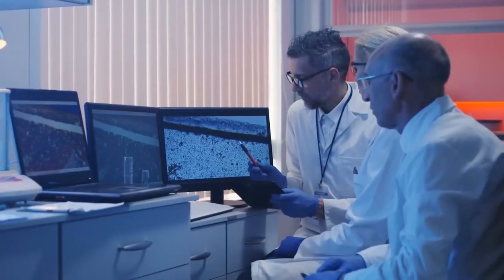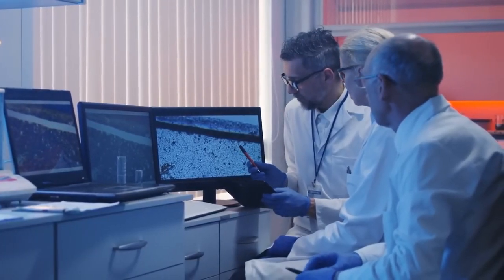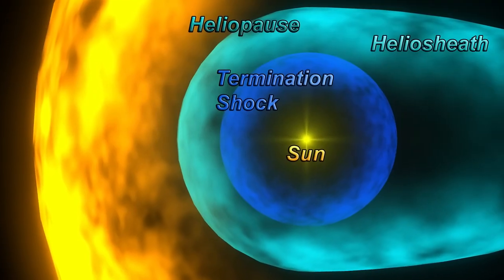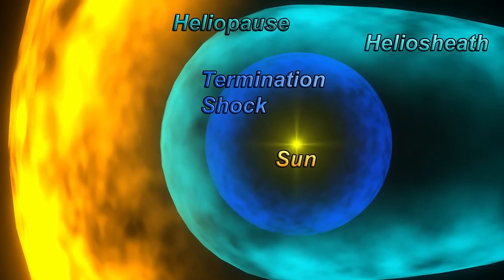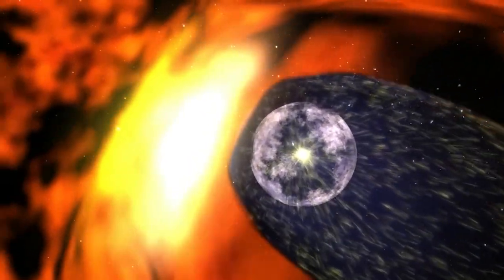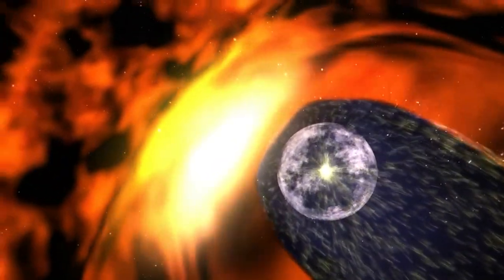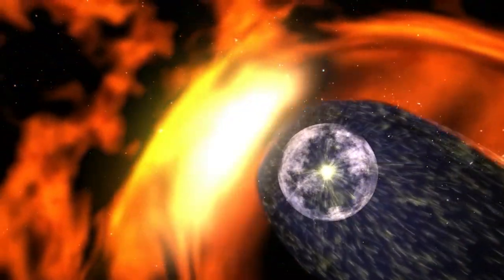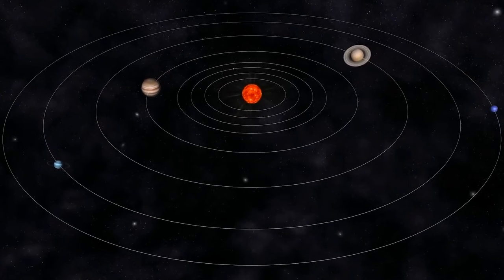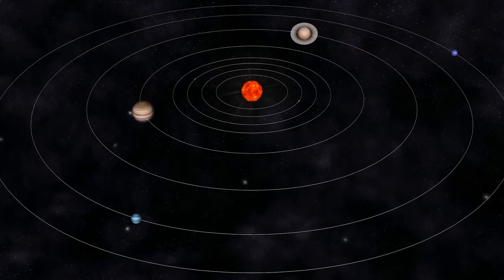As scientists combine Voyager's data with information from other missions, they're beginning to create models that predict how the heliopause will change in the future. But with such unpredictable forces at work, it's impossible to know what lies beyond the boundary of our solar system. Will we encounter hostile forces or unknown dangers? Only time will tell.